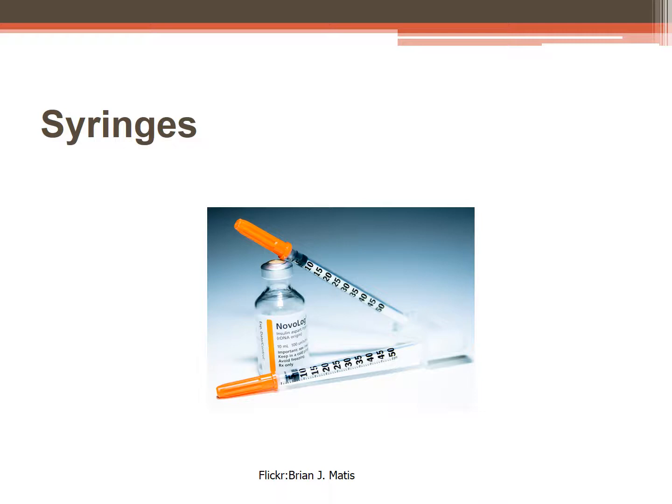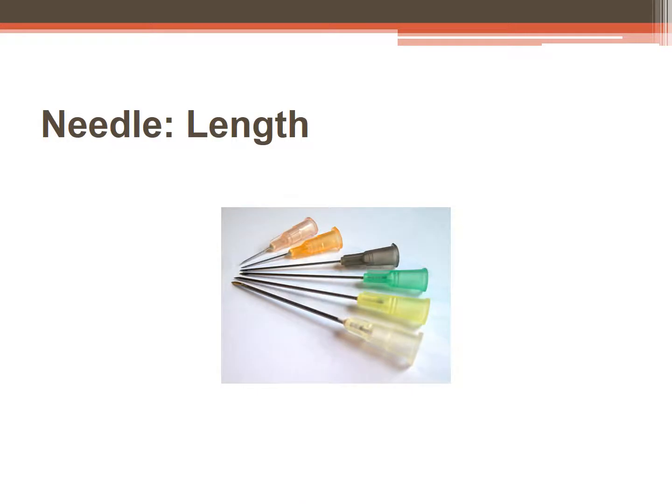Syringes are considered sterile until opened from the package. As we prepare to give an injection, we must consider the length and the gauge of a needle. Injection needles usually come from 3/8 to 1½ inches as our standard sizes. For intramuscular injections we usually use a 1 to 1½ inch needle, and for subcutaneous we usually use a 3/8 to 5/8 inch needle.